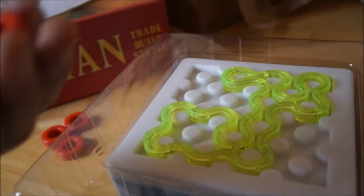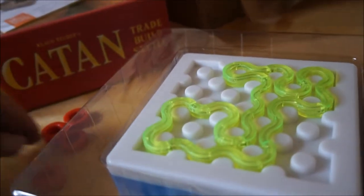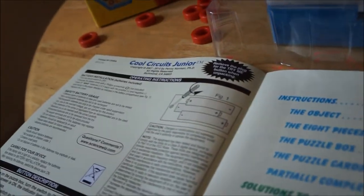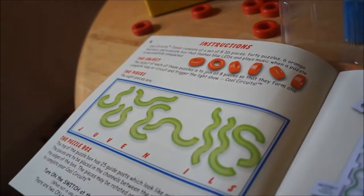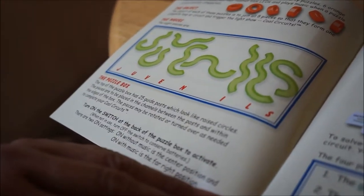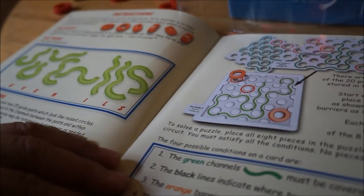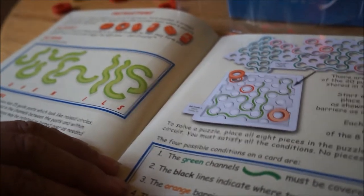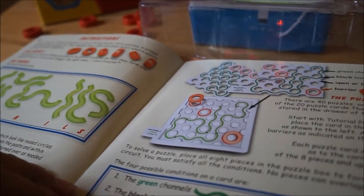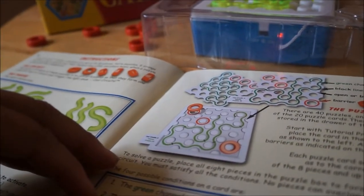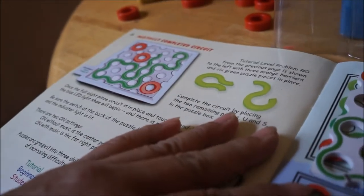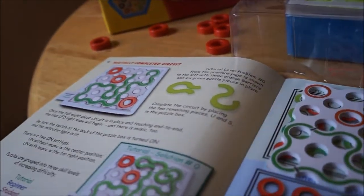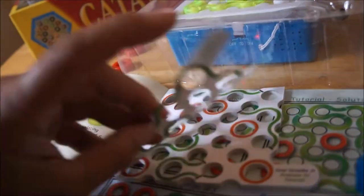Huh. I'm not sure what these are for. Let's see what they talk about. The orange barriers cover areas which must be avoided. Okay. The open channels may or may not be covered with puzzle pieces. Okay. So they give you a partially completed circuit and then you finish it.